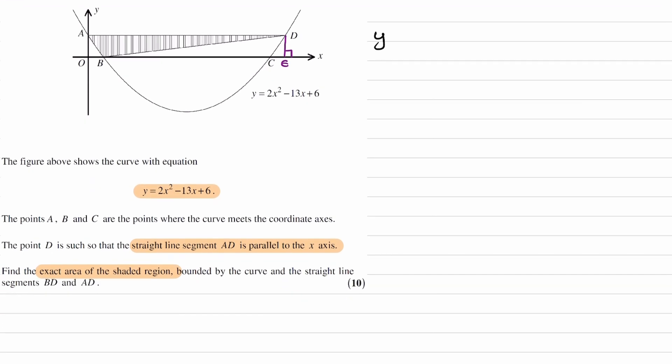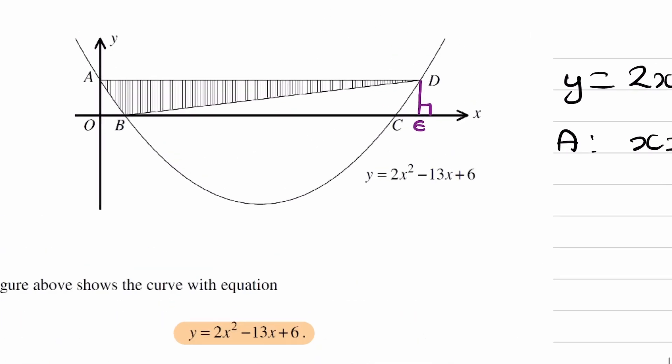We have the equation of our curve, y equals 2x squared minus 13x plus 6. To work out coordinate A, we can set x equal to 0. So this is where it hits the y-axis. x is 0 at that point. If x is 0, y is equal to 6. So this coordinate here is 0, 6.